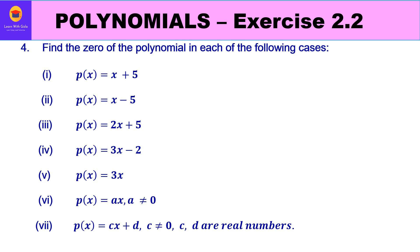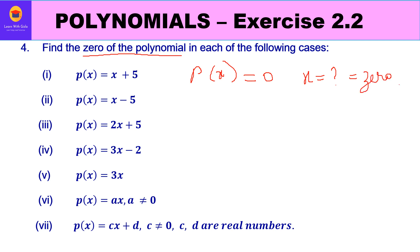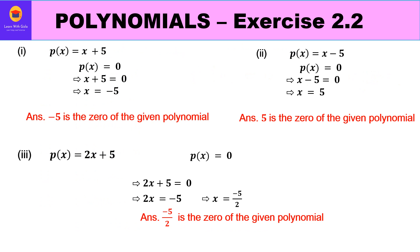Now we come to the fourth question: find the zero of the polynomial in each of the following cases. To find the zero, equate the polynomial to 0 and solve for x. For part one, p(x) = x + 5: set x + 5 = 0, so x = -5. Therefore -5 is the zero of the polynomial.